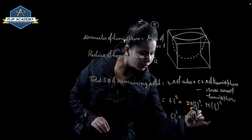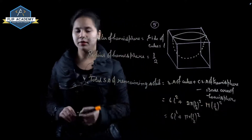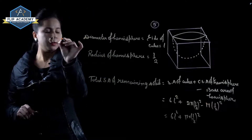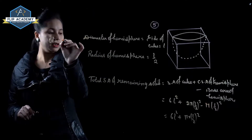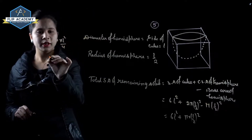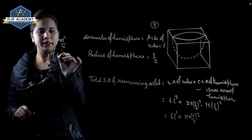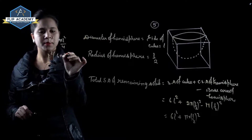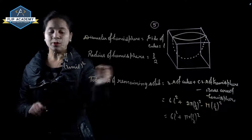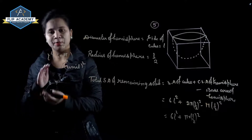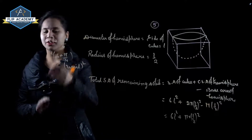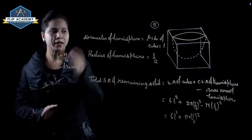Simplifying, we get 6 l squared plus pi l squared upon 4. Taking l squared as common, we get l squared into bracket 6 plus pi upon 4 unit squared. So total surface area of remaining solid equals l squared times open bracket 6 plus pi upon 4 close bracket. Question number 5 is complete.